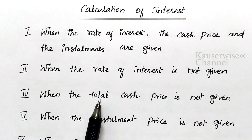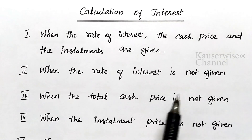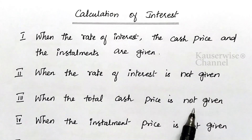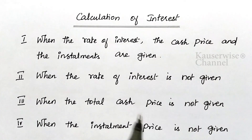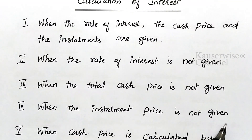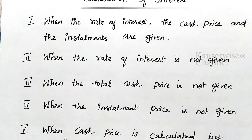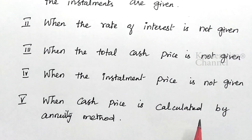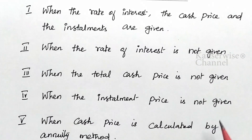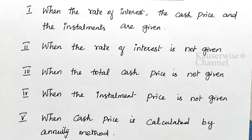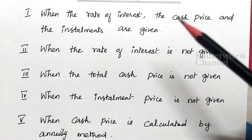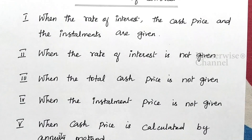The third case is when the total cash price is not given. The fourth case is when the installment price is not given. The fifth and last case is when the cash price is calculated by the annuity method — this method is totally different from the above four methods. We are going to see a problem for each and every method separately. In this video, we are going to see the problem for the first case; the remaining problems will be covered in separate videos, and you can find the links in the description box.